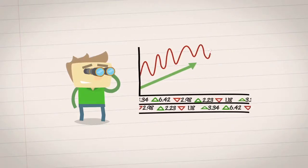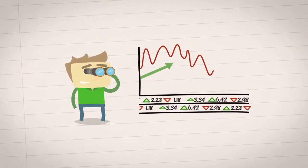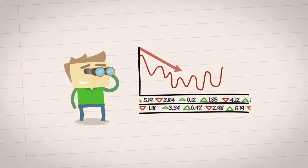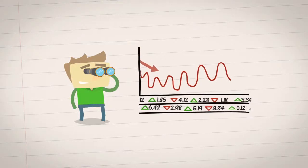If the highs keep getting higher and the lows keep getting higher, that stock is in an uptrend. If the highs get lower and the lows get lower, you're looking at a downtrend. And if the highs and lows are consistent over a certain period, it's in a sideways trend.